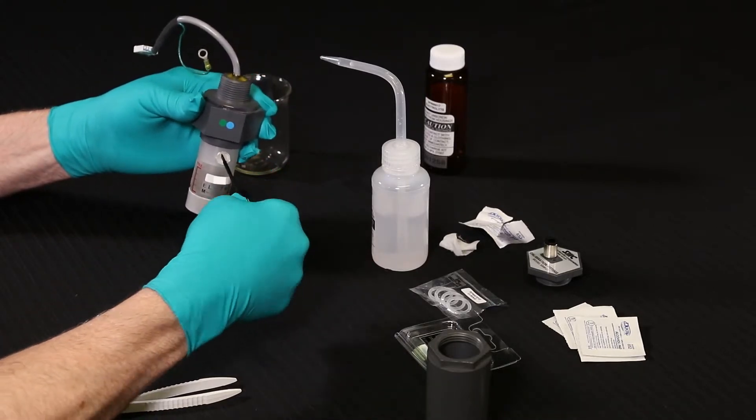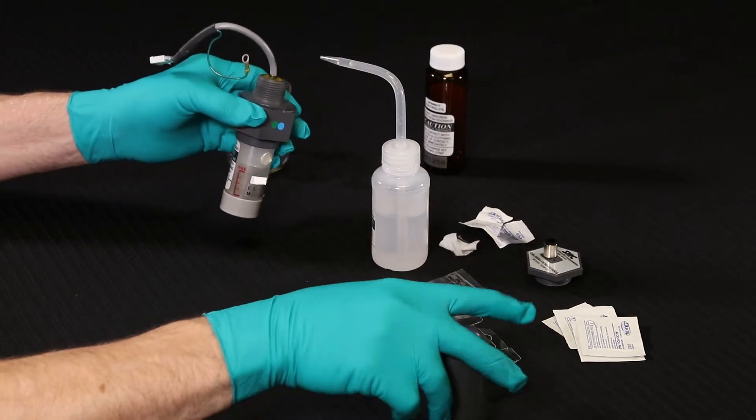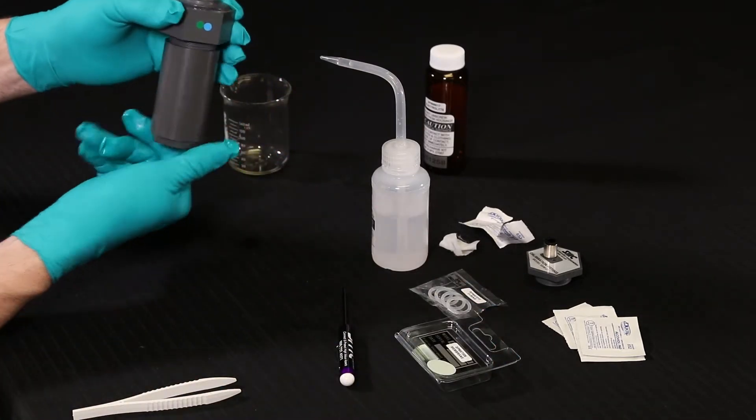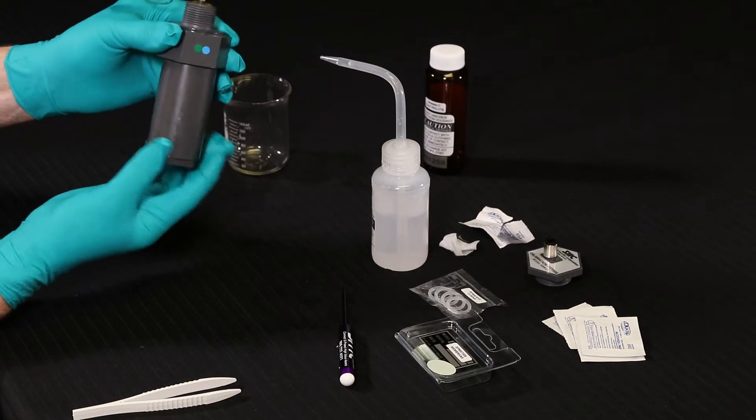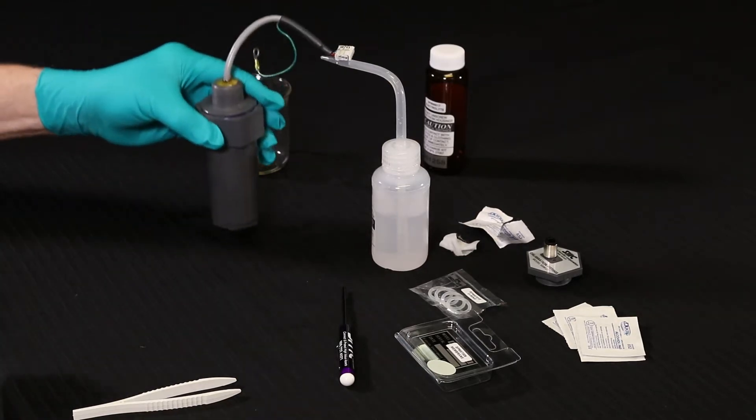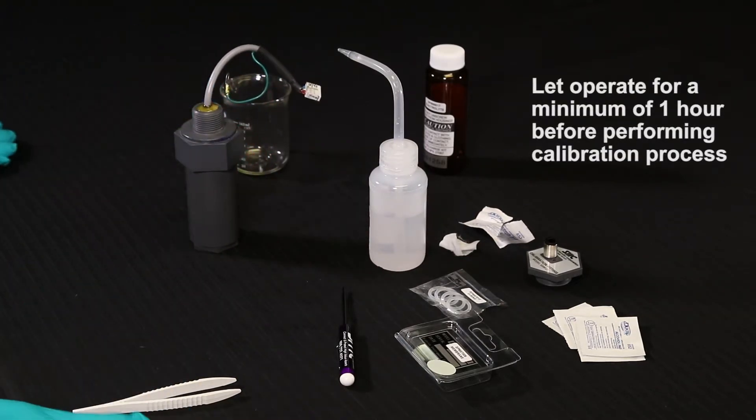This completes the sensor recharge process. Now, reinstall the sensor assembly into the instrument enclosure and plug the connector into the transmitter. Then, reinstall the gas detector to the proper location and replace power. Be sure to allow the new gas detector to operate for a minimum of one hour before performing calibration.